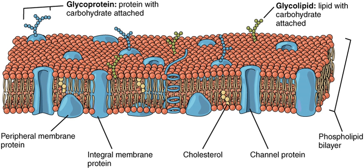Generally, small hydrophobic molecules can readily cross phospholipid bilayers by simple diffusion. Particles that are required for cellular function but are unable to diffuse freely across a membrane enter through a membrane transport protein or are taken in by means of endocytosis, where the membrane allows for a vacuole to join onto it and push its contents into the cell.